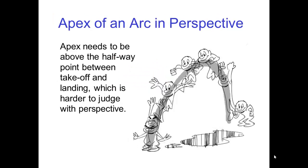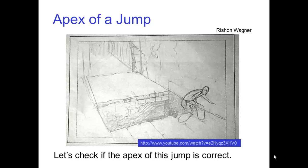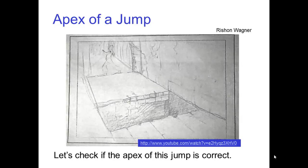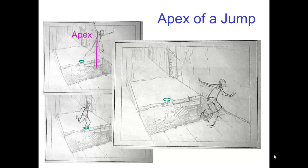The apex of a parabolic arc for a jump should be above the halfway point between takeoff and landing, which is harder to judge with perspective. Let's check if the apex of this jump is correct. Here are the drawings for the takeoff, apex, and landing. Checking the perspective, it looks like the apex is just a bit too close to camera. But not too bad.